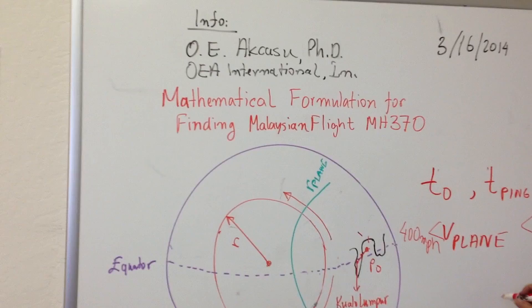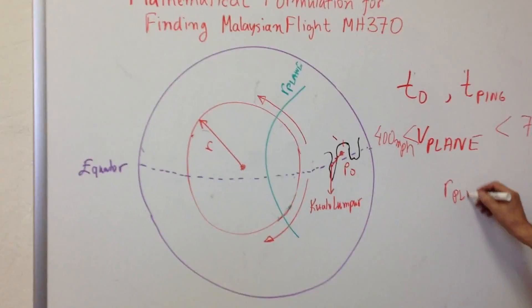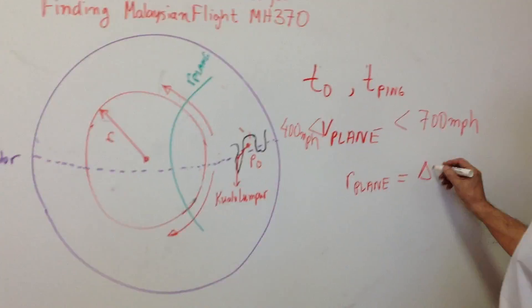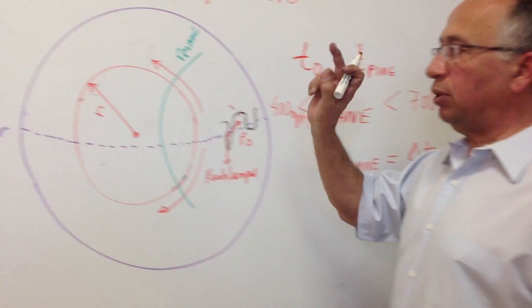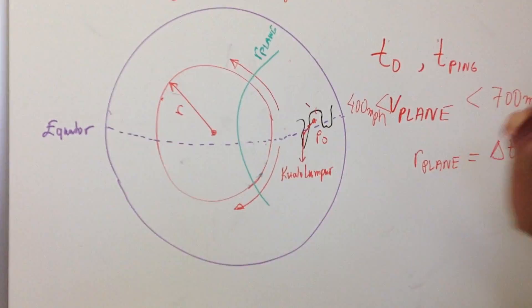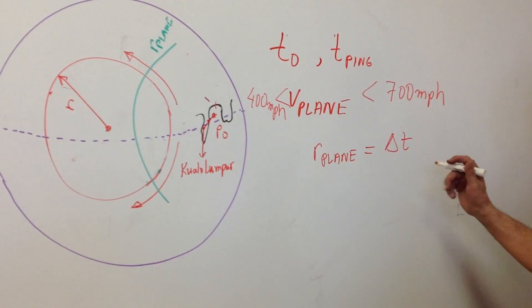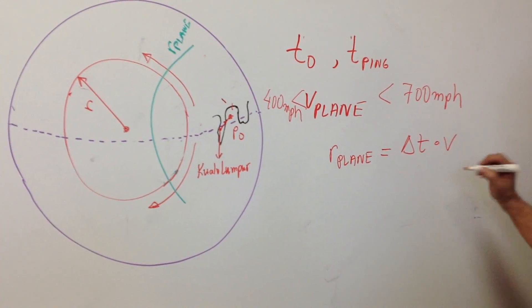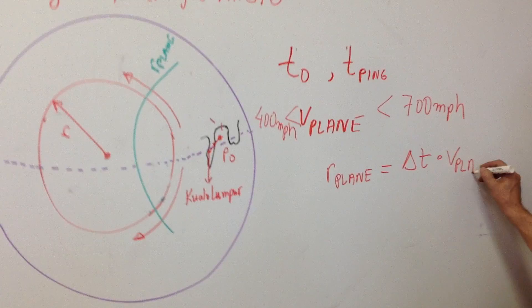R_plane is equal to delta T, the time difference between the satellite ping data and the time we had the last contact, times velocity or the speed of the plane.